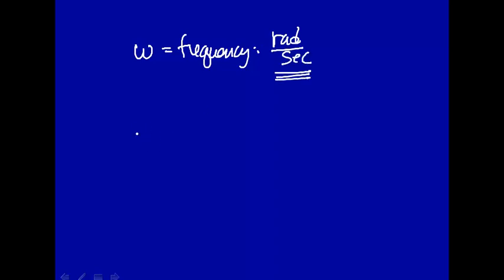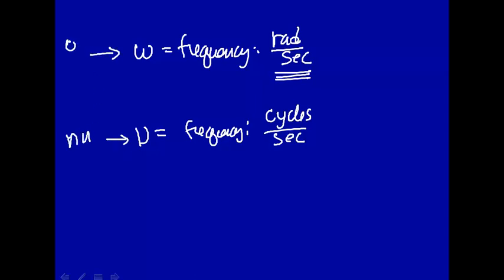Now, perhaps you're more familiar with frequency in terms of cycles per second. So this is frequency in cycles per second. That's given the Greek symbol nu, whereas this is given the Greek symbol omega. Now, how do you convert from frequency in radian per second to frequency in cycles per second?